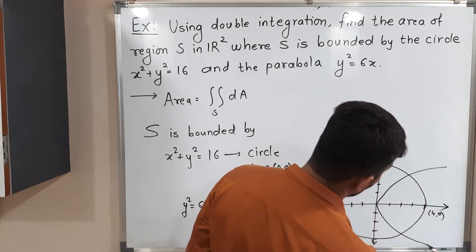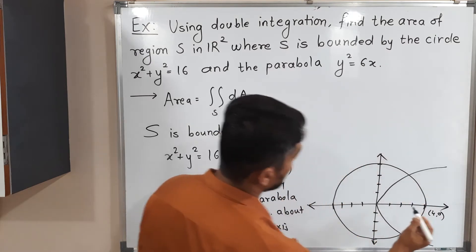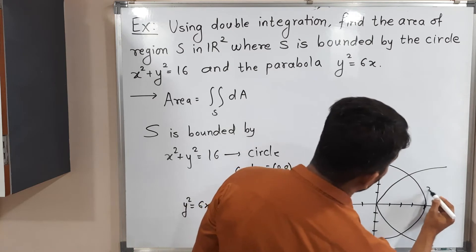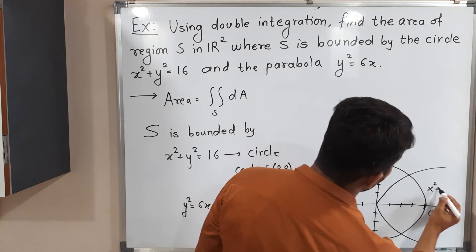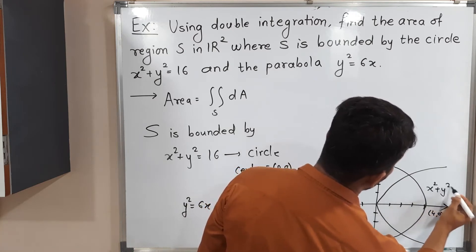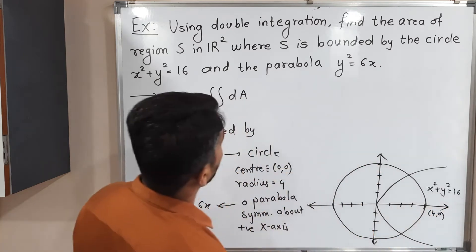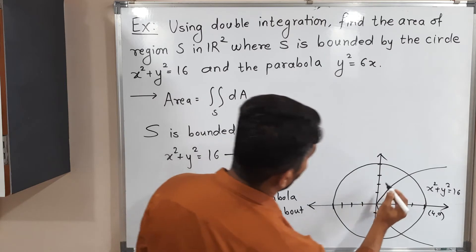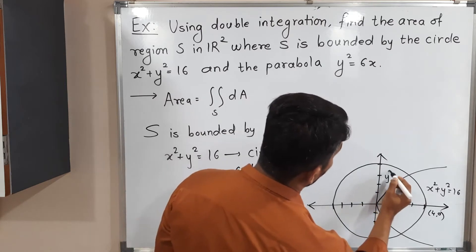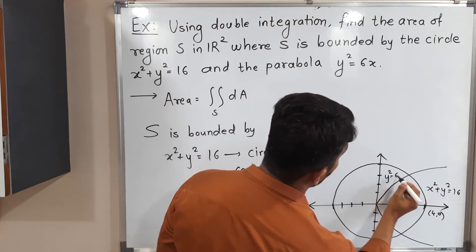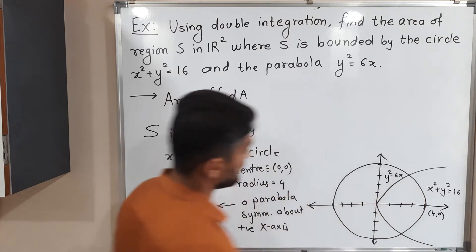I will draw a rough sketch of the parabola along with the circle. The circle has equation x² + y² = 16 and the equation of the parabola is y² = 6x.